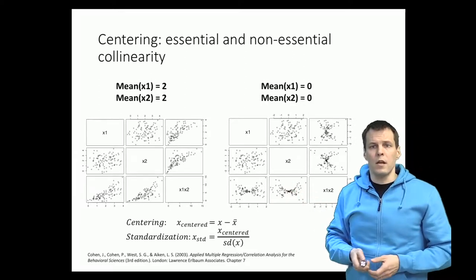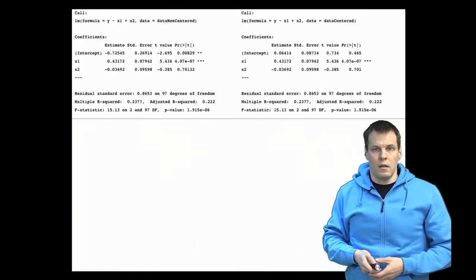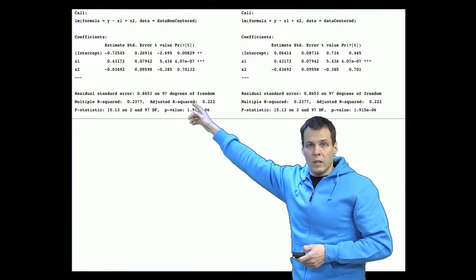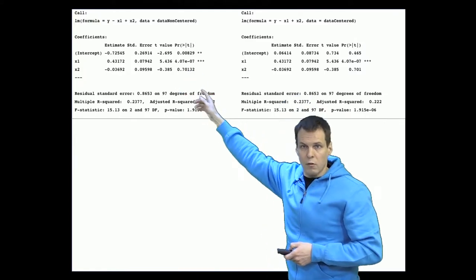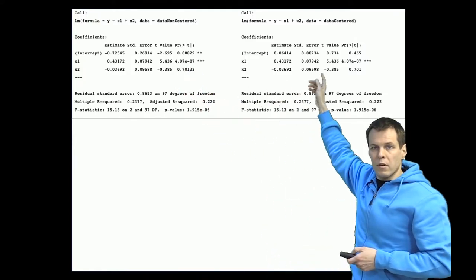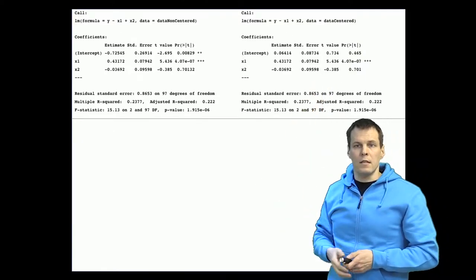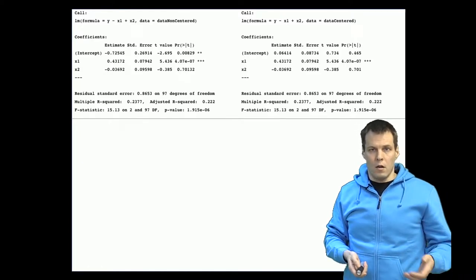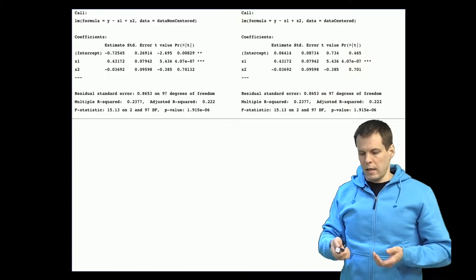So what's the implication for regression analysis with this centering stuff? On the left-hand side we have the regression analysis for the data that is not centered and on the right-hand side we have regression analysis for centered data. And we can see that the difference in what the centering does for regression of Y on X1 and X2 is that it just changes the intercept.